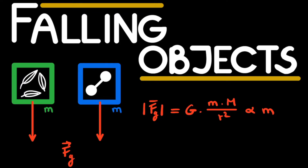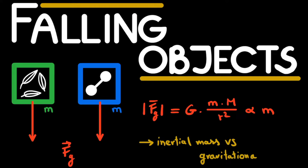At the end of this video, you will be able to explain why this is. To do so, we will need to discuss a fact that is oftentimes underappreciated, namely that there are two types of mass: the inertial mass and the gravitational mass. Let's see how this exactly works.